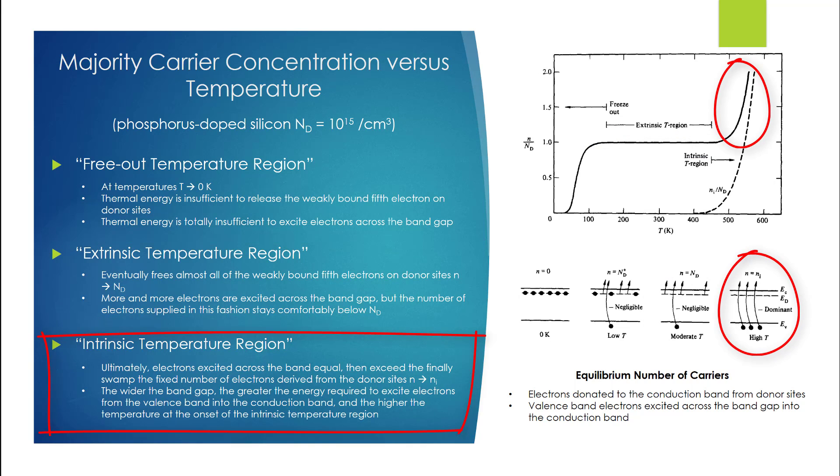Ultimately, electrons excited across the band gap equal, then exceed, and finally swamp the fixed number of electrons derived from the donor sites.